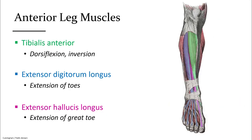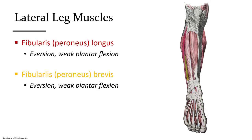On the anterior calf or lower leg, we see tibialis anterior, which lifts our foot up for the dorsiflexion movement. Extensor digitorum longus lifts the toes, and extensor hallucis longus in pink extends or lifts the big toe. On the lateral calf are the peroneus longus and peroneus brevis — more recently renamed fibularis longus and fibularis brevis. These lift the lateral foot to drop the arch down in the eversion motion.